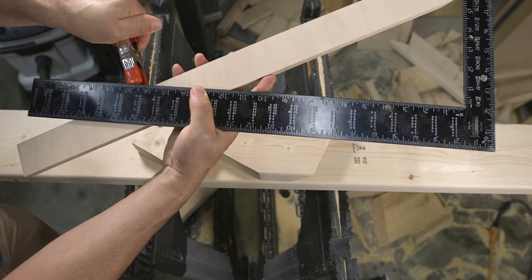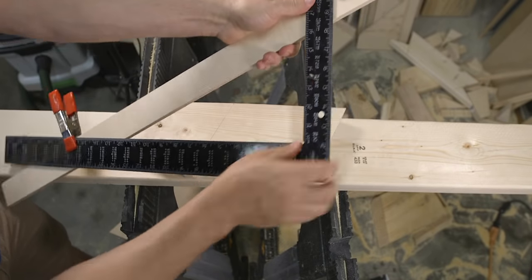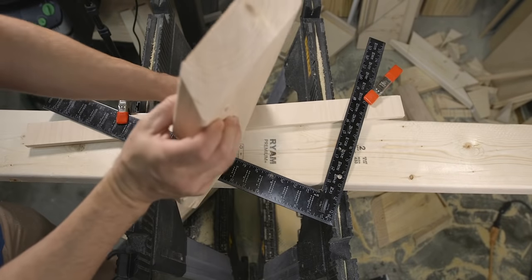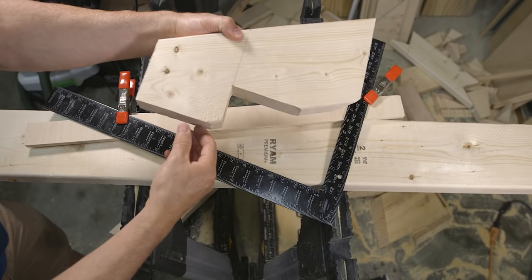To lay out the jack rafters, you have to put your square back to a six twelve. Again, because we're not cutting hips anymore.